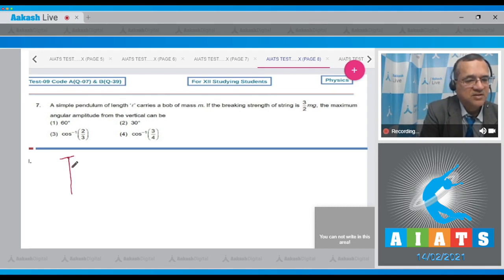Let us say we release the pendulum from this state when it is making an angle theta and as it comes down the tension in the string continuously increases. So the maximum tension is at the bottom most point. If you write the equation for tension, T minus mg equals m v² divided by L.